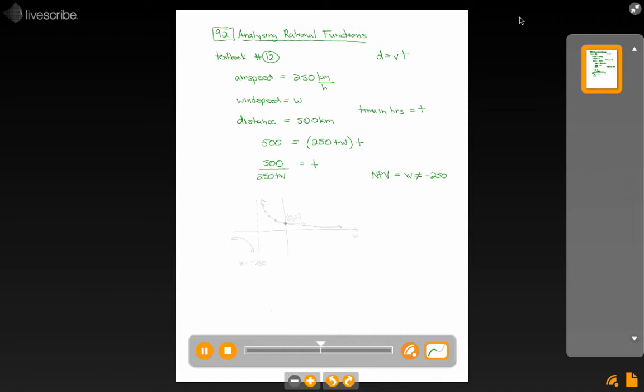Now, they ask us to graph this function. Obviously, you have to do it with Ys and Xs instead of Ts and Ws. But if you graph this thing and graph it big enough that you actually see the non-permissible value, you find that non-permissible value is actually a vertical asymptote that X equals, and in this case it's actually W, but at W equals negative 250.